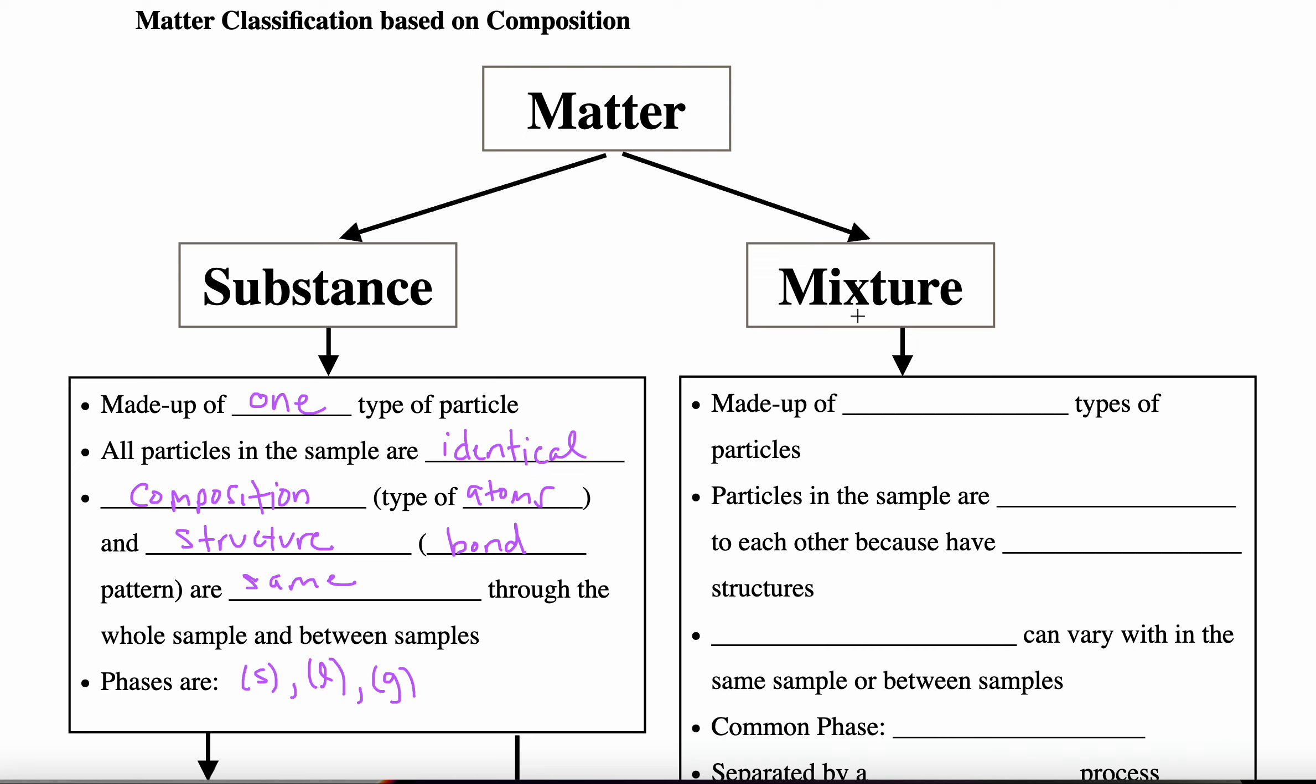Our other type of matter is a mixture. Probably mostly what we use in our everyday lives is actually mixtures. So mixtures are made up of different types of particles. There's more than one type present. So the particles in the sample are not identical to each other. One reason is because they have different structures.